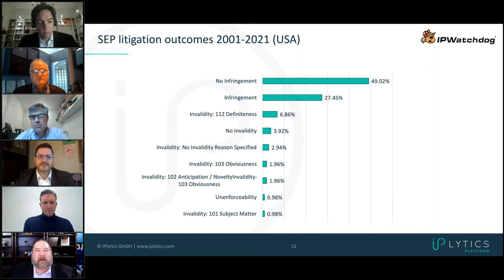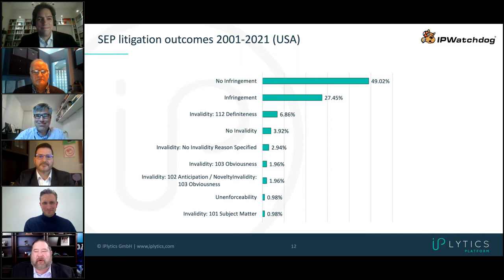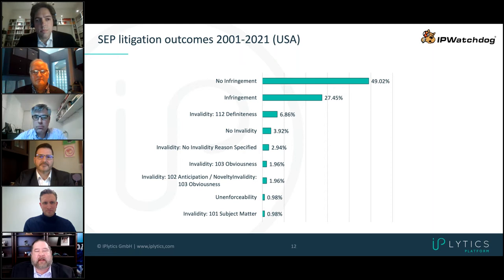IPlytics is a new sponsor for us here at IP Watchdog. Sponsors allow us to bring these types of events to you for free — our model is sponsor-driven, a freemium model. Sponsors like IPlytics really make all of this possible and make it possible to give you guys free CLE. I have no problem asking you to please check IPlytics out — the data they put together here demonstrates they have an awful lot of good data. If you really find yourself in need for data, and a lot of times you're going to need this data to take to the boardroom to convince people to do one thing or another, please hit them up and check out what they offer.